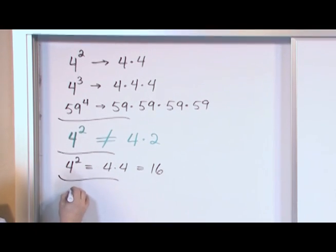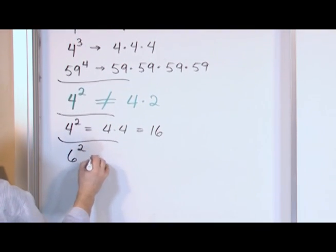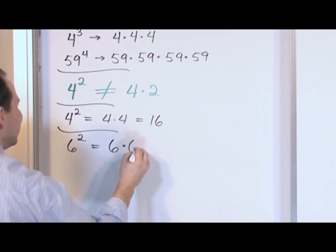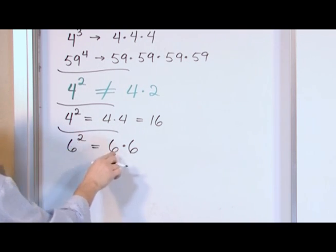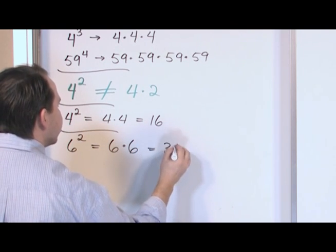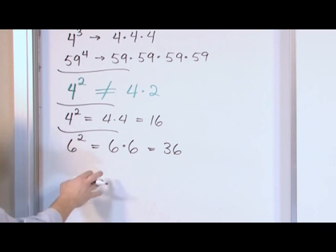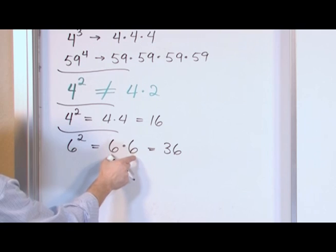Let's do another one. Let's say we have six squared. What would that be equal to? That would be six multiplied by itself two times because that's the number here. Six times six is going to give us 36. You can see right away that six times two, if you just did that, would be 12. That's nothing even close to 36. So just forget about multiplying these. You have to multiply by itself.